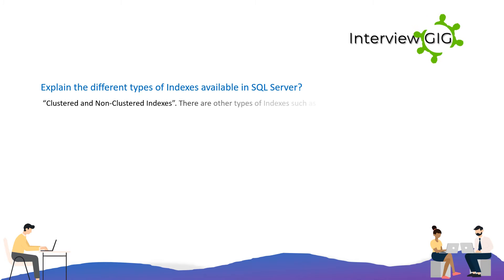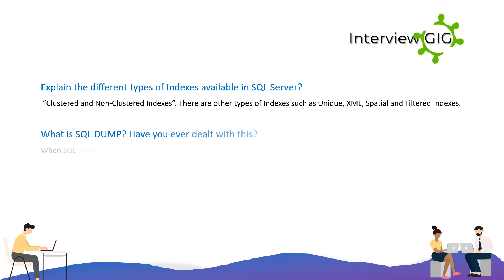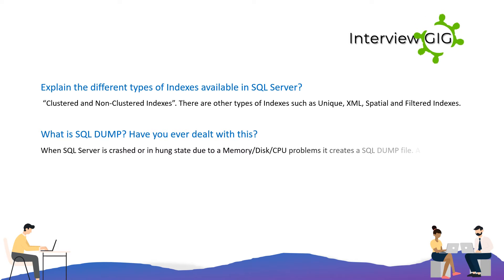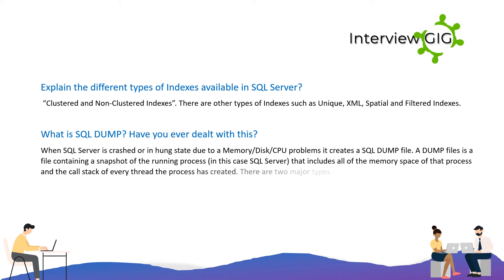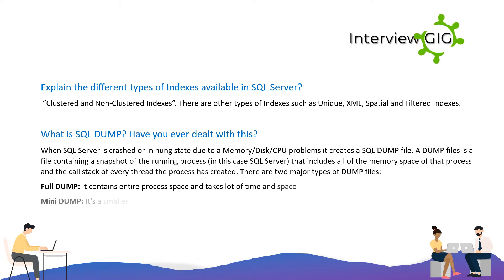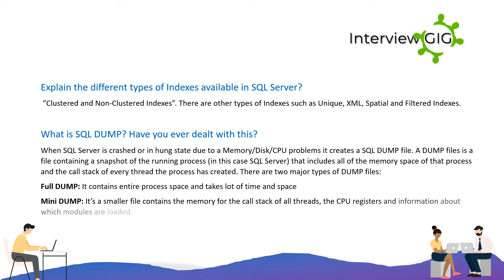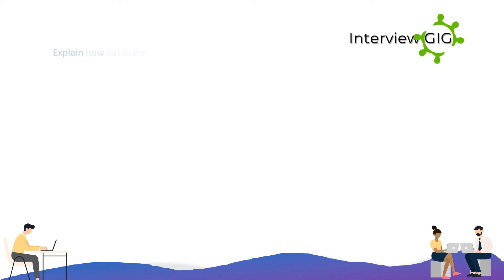Different types of indexes available in SQL Server include clustered, non-clustered, unique, XML, spatial, and filtered indexes. Regarding SQL dumps: when SQL Server crashes or enters a hung state due to memory, disk, or CPU problems, it creates a SQL dump file — a snapshot of the running process including all memory space and the call stack of every thread. There are two major types: a full dump, which contains the entire process space, and a mini dump, which is a smaller file.